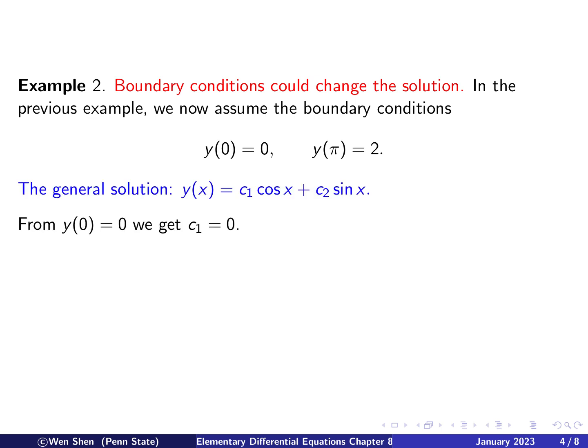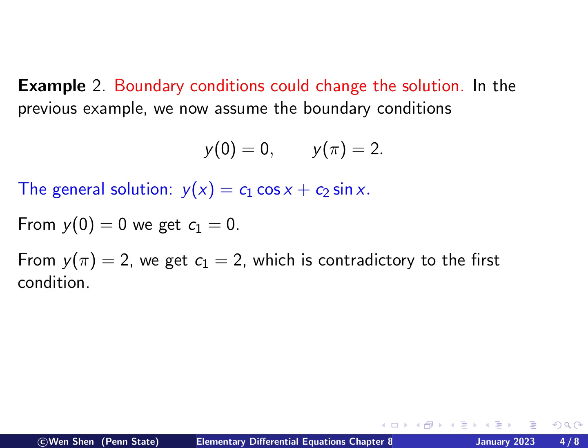The general solution is the same: c1 cosine x plus c2 sine x. From y(0) = 0 we get c1 = 0. From y(π) = 2: cosine π = −1 and sine π = 0, giving −c1 = 2, so c1 = −2. But c1 cannot be both 0 and −2 — a contradiction. Therefore there are no solutions.